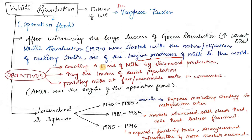The objectives of the White Revolution were: first, creating a flood of milk through increased production — that is why it was called Operation Flood; second, increasing the income of the rural population; and third, providing milk at a fair and reasonable rate to consumers. Amul was the engine of Operation Flood, and is one of the largest cooperative societies in the world related to milk.